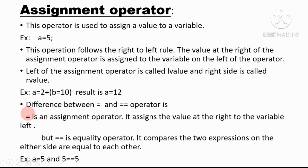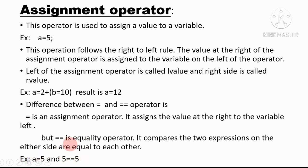Now see the difference between the two operators. The single = is an assignment operator — it assigns a value to the variable on the left-hand side. But == is an equality operator — it compares the two expressions on either side to check whether they are equal or not. For example, a = 5 assigns the value 5 to variable a, whereas a == 5 compares whether the value of a is equal to 5.